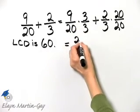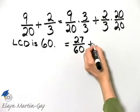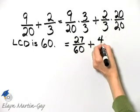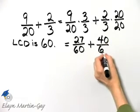Nine times three is twenty-seven over twenty times three is sixty, plus two times twenty is forty, over three times twenty is sixty.